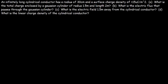An infinitely long cylindrical conductor has a radius of 30 centimeters and a surface charge density of 15 microcoulombs per square meter. What is the total charge enclosed by a Gaussian cylinder of radius 1.5 meters and length 2 meters?